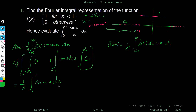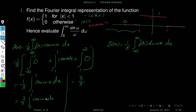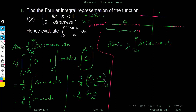Since cos is an even function we can write this as (2/π) ∫₀^1 cos(ωx) dx. Integrating: the integral of cos is sin, so this becomes (2/π) [sin(ωx)/ω]₀^1. When x = 1 this gives sin(ω)/ω; when x = 0, sin(0) = 0. So a(ω) = 2sin(ω)/(πω).